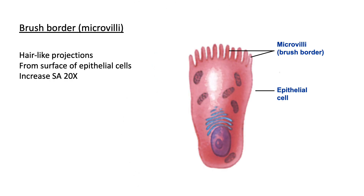Shown here is a single simple columnar epithelial cell with these hair-like projections atop it. These are microscopic extensions of the plasma membrane, and we call them microvilli, or the brush border. They're going to increase the surface area another 20-fold.